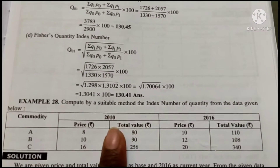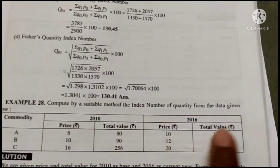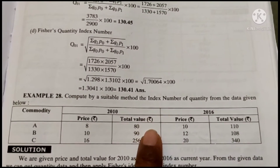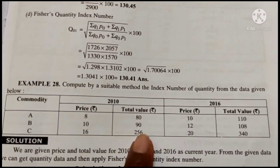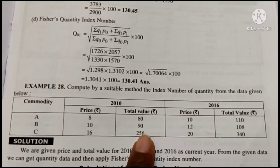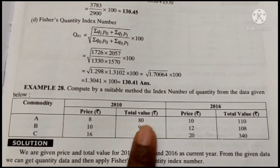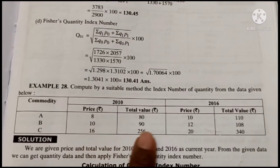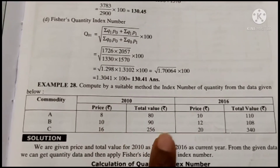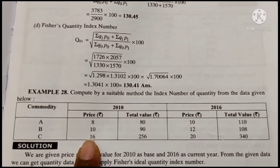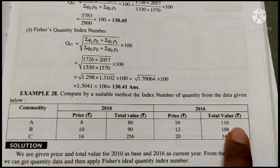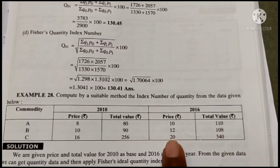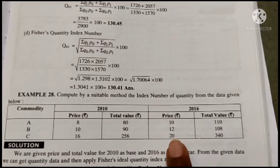For the homework, since quantity is not given but price and value are given, use: Quantity = Value ÷ Price. For Q0: 80÷8, 90÷10, 256÷16. For Q1: 110÷10, 108÷12, 340÷20. This gives you all the quantities needed to proceed with the four index number formulas.